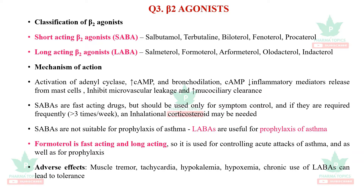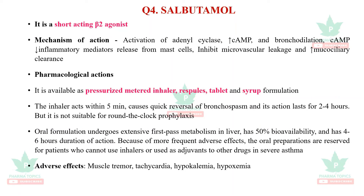SABAs are not suitable for prophylaxis of asthma, whereas LABAs are useful for prophylaxis. Formoterol is a unique drug — it is both fast-acting and long-acting, so it is used for control of acute attacks as well as for prophylaxis. The adverse effects of beta-2 agonists, because they are sympathomimetics, include muscle tremor, tachycardia, hypokalemia, and hypoxemia. Chronic use of LABAs can lead to tolerance and the dose has to be increased.